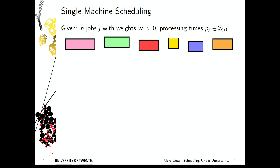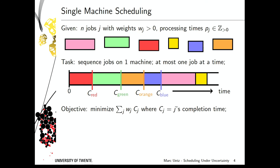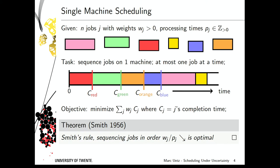We have n jobs with weights w and processing times p, assumed to be integer, and the jobs are non-preemptive — once started they must not be interrupted. If you sequence these jobs on a single machine, each job receives a completion time C_j. It's a well-known result called Smith's rule: sequence jobs in order of largest weight over processing time first. That's a simple exchange argument, so that problem is not interesting.